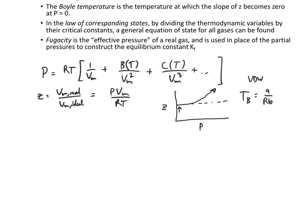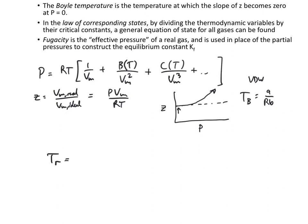Next, the law of corresponding states. The reduced temperature equals the temperature of the system divided by its critical temperature; reduced pressure equals the system pressure divided by the critical pressure; and reduced molar volume equals the molar volume divided by the critical molar volume. Calculating these allows us to fairly accurately predict the pressure-temperature phase diagram — including boiling points, the triple point, and compression factor curves — if we know the critical constants for a gas.